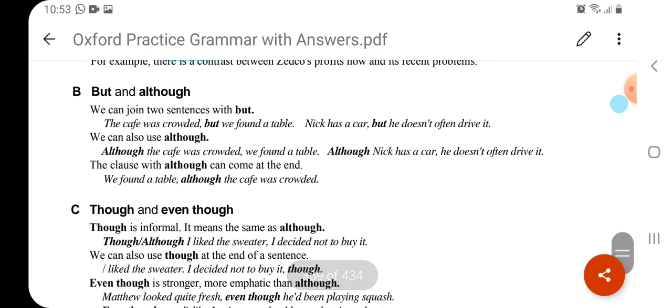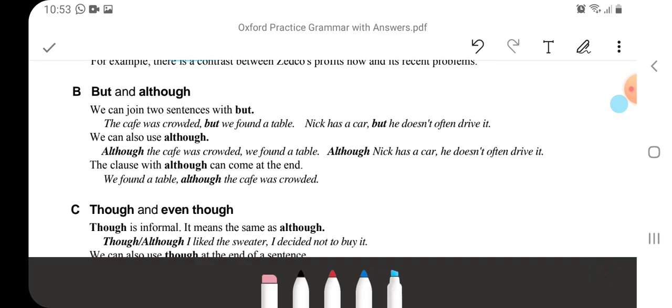Now we will discuss some of the conjunctions which are important: but and although. We can join two sentences with but. The cafe was crowded but we found a table. Nick has a car but he doesn't often drive it. We can also use although. Although the cafe was crowded, we found a table. Although is used at the start of a sentence. Although Nick has a car, he doesn't often drive it. We found a table although the cafe was crowded.